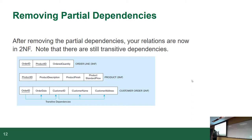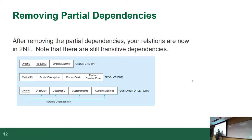Ordered quantity is dependent on the order ID and the product ID — we already established that was good. The product description, finish, and price only depend on the product ID. The customer address, name, ID, and order date only depend on the order ID. Now in this one here there's still an issue — that's going to get resolved in the third normal form. This is technically second normal form because customer ID is not part of the primary key. These are known as transitives. We got rid of the partial dependencies — all the data now depends on the entire primary key. That's the second normal form.